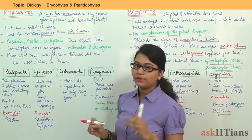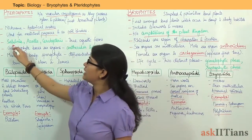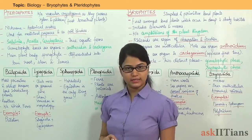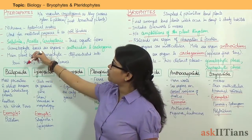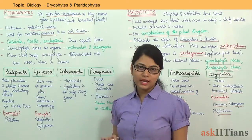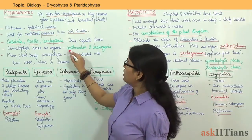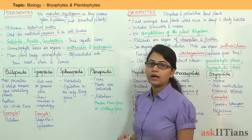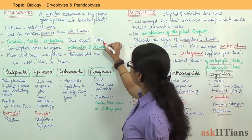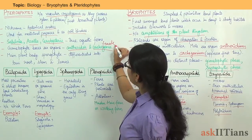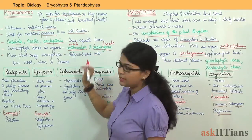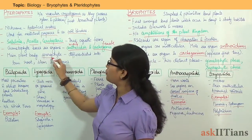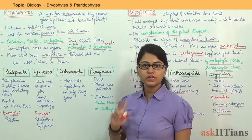There are 3 true aquatic plants: Salvinia, Azolla, and Ceratopteris. Gametophyte bears sex organs — the male one is called Antheridium and the female one is called Archegonium. The main plant body, known as the sporophyte, is differentiated into true root, stem, and leaves.